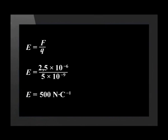The direction of the electric field is the same as the direction of the field lines. This is a positive charge, so the direction of the electric field is outwards, away from the charge.